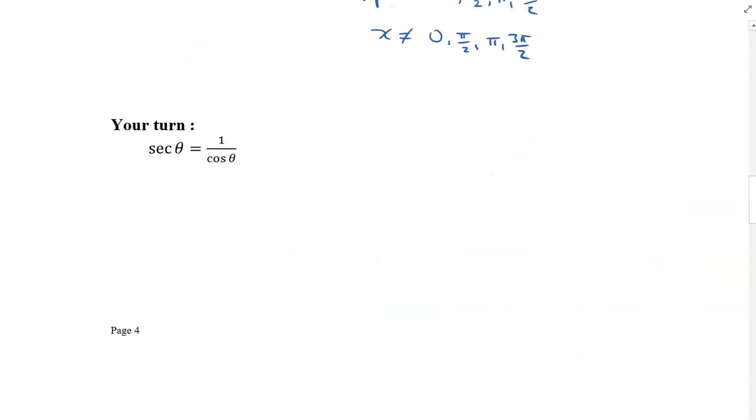Okay, so here's a your turn. Same idea. We're going to look for any possibilities of having a denominator of zero. So hint, you're going to be looking right over there. So I'm going to stop the video now. Try the your turn, and then check with me on the next video. Thank you.